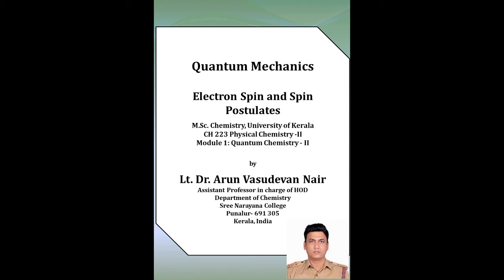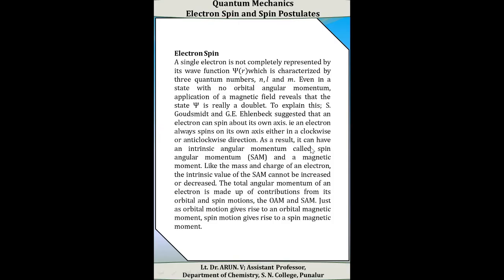In your syllabus is electron spin and the postulates of spin. First of all, we have to discuss what is electron spin. We know that a single electron is not completely represented by the wave function psi(r). That is, psi(r) is characterized by three quantum numbers: the principal quantum number, and the magnetic quantum number.